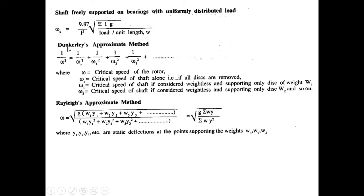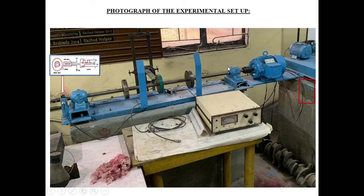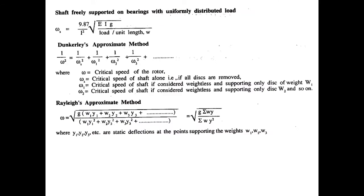You go back to your textbook and you will find that out of these two methods, one overestimates and one underestimates. Overestimate means we will find an experimental value, and overestimate means higher than that particular value. Underestimate means lower than the actual value. Let us go to our experimentation.